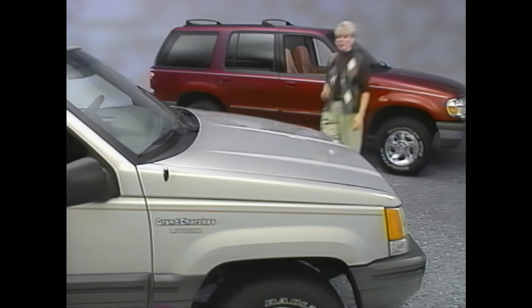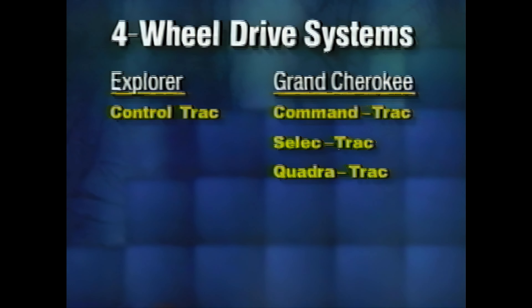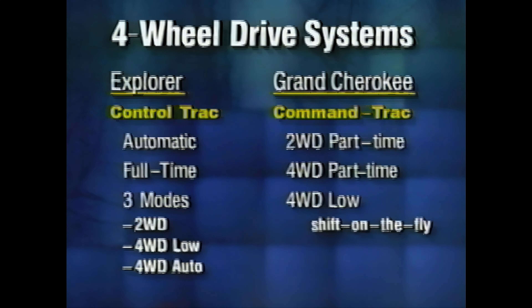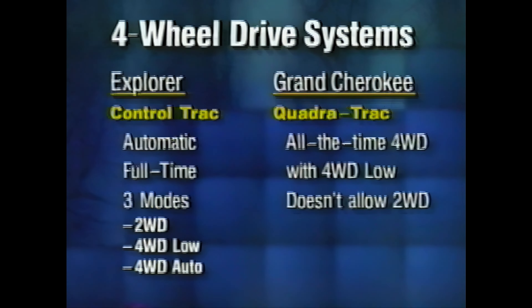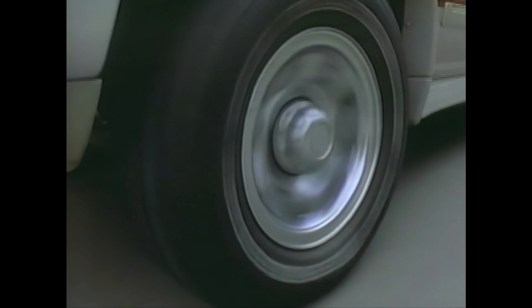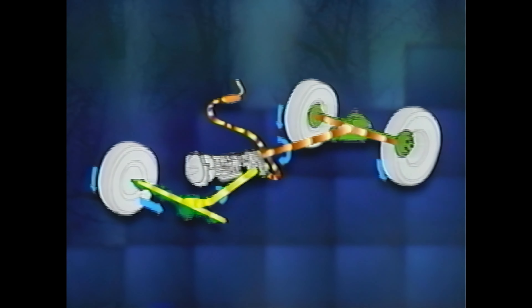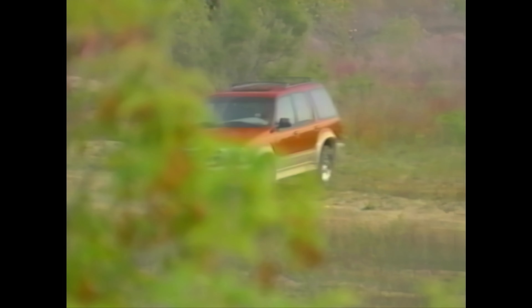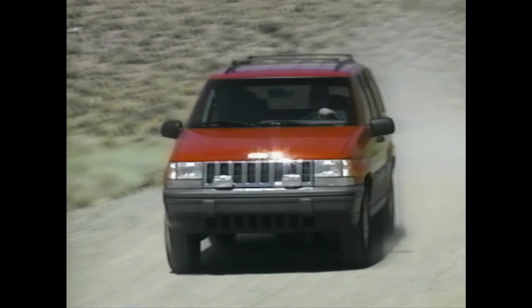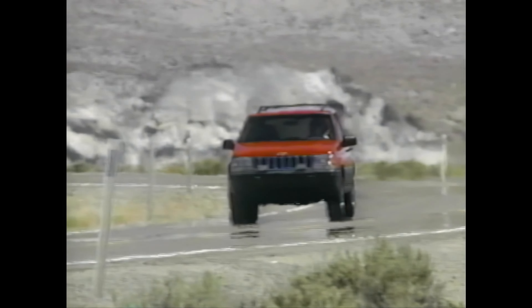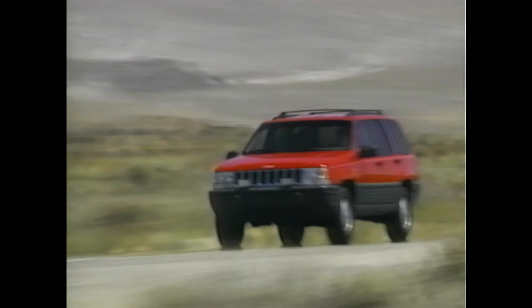In contrast, Jeep makes buyers choose from three four-wheel drive systems. Command Track is a part-time system for use off-highway or on slippery road surfaces. Select Track is a full-time four-wheel drive system for use on or off-road. Quadra Track is Jeep's best system — an all-the-time system, meaning it operates in four-wheel drive all the time. The important difference is that Control Track uses electronic sensors to actively monitor wheel slip and can engage four-wheel drive in a fraction of a second, while permitting operation in fuel-saving, wear-reducing two-wheel drive at other times. Quadra Track employs a viscous coupler that senses differences in traction between the axles and progressively locks the center differential, transmitting the most torque to the axle with the greatest traction.